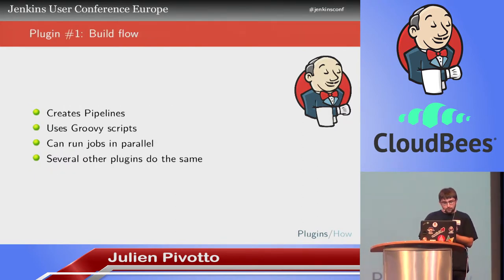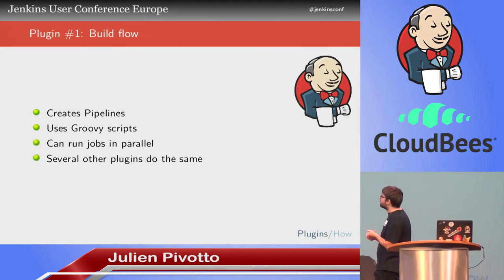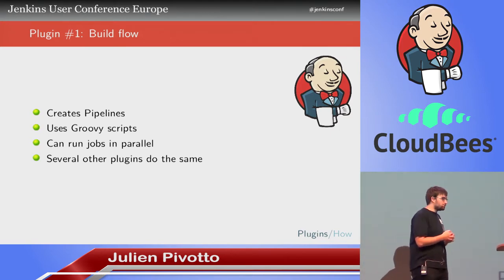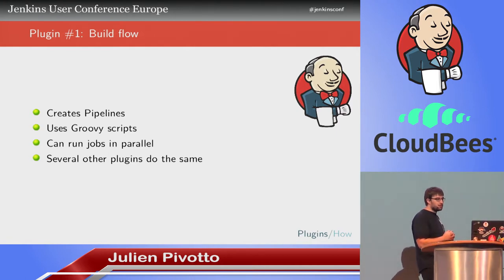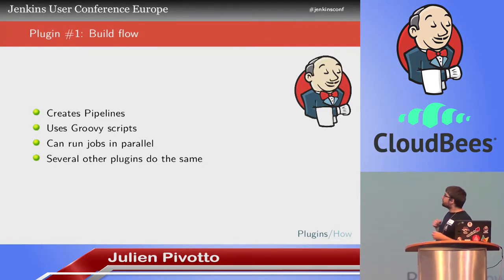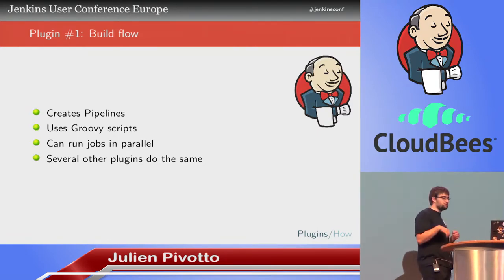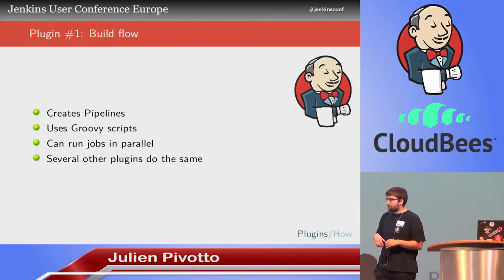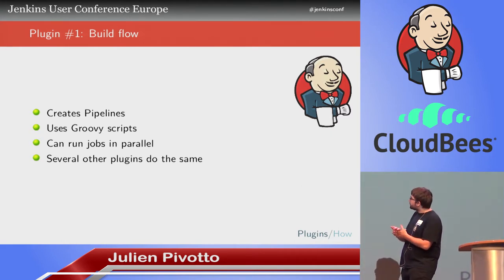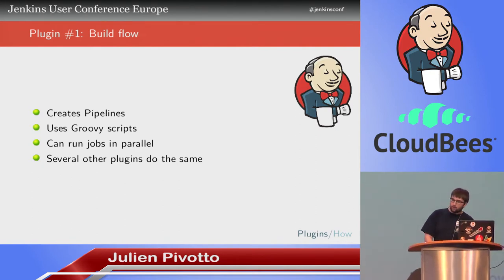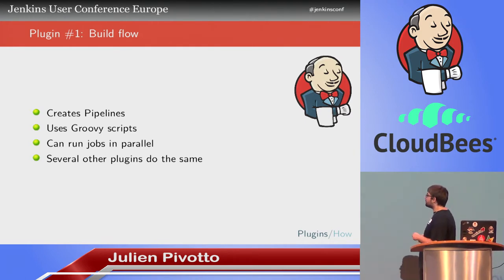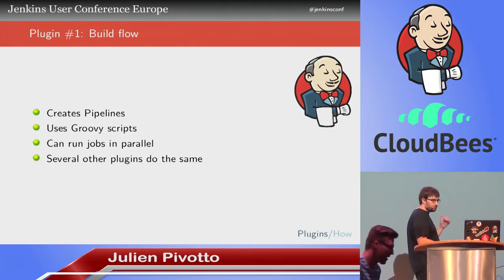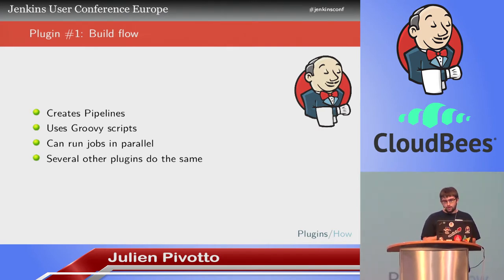The first plugin I will talk about is the build flow plugin. The build flow plugin is made to design pipelines — it will call different jobs using Groovy scripts. The Java community uses that a lot. One of the main advantages compared to the default pipeline approach is that it can run jobs in parallel, but that's only one of the possibilities. You have the build flow plugin, but there are also a lot of other plugins that do the same — you can substitute this one with other build flow plugins.